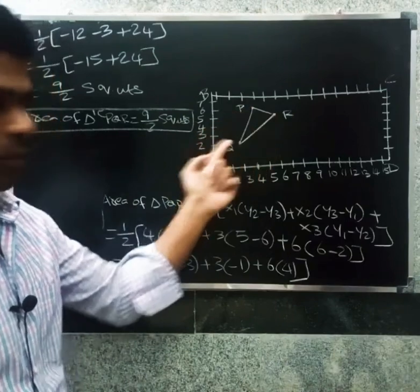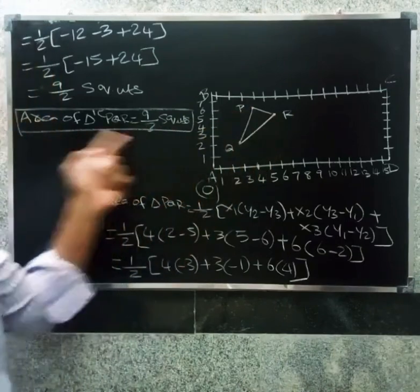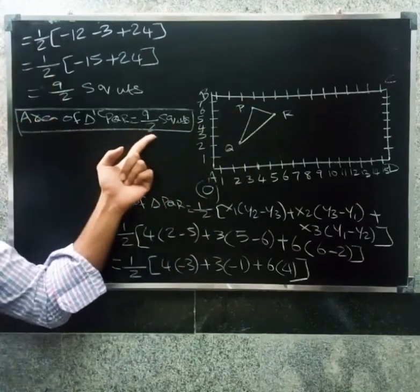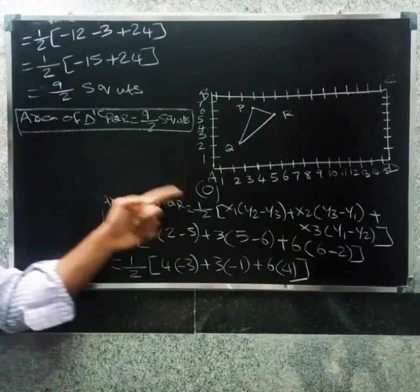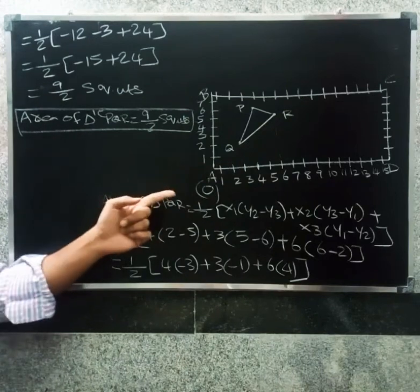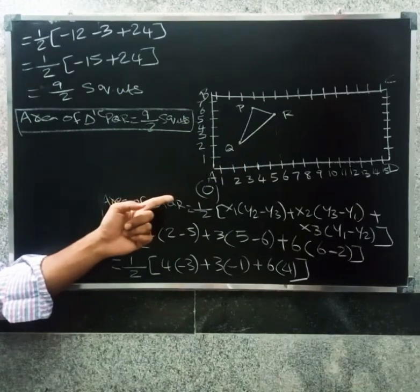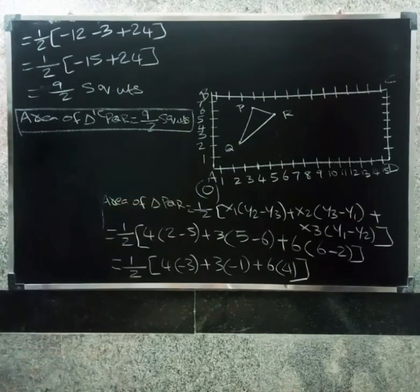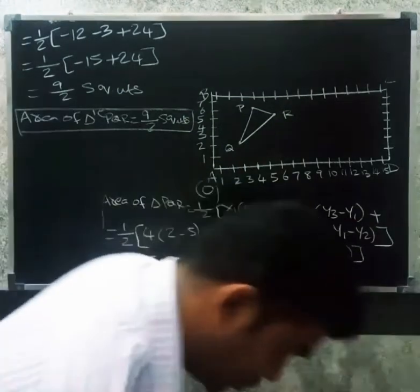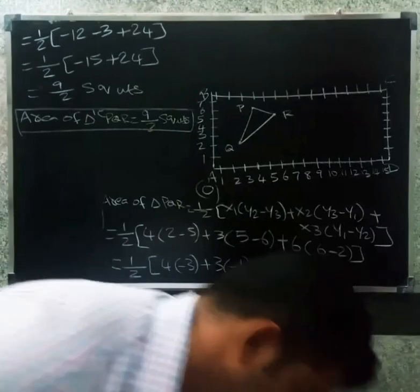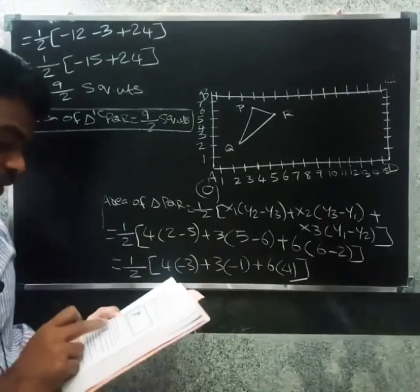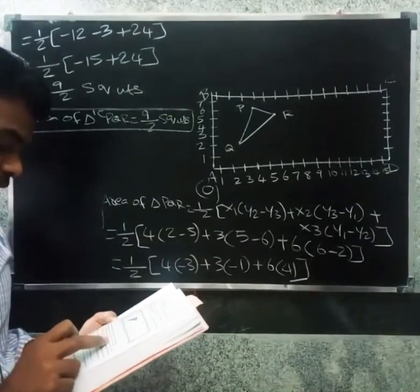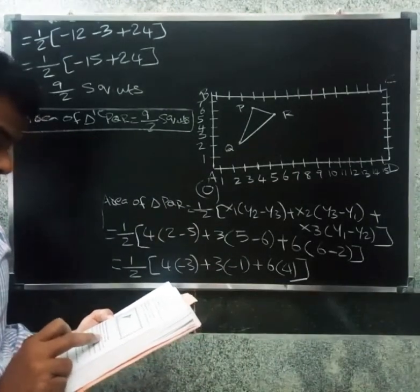This is the first question taking A as the origin, giving area of triangle PQR as 9/2 square units. Now the second question asks: what will be the coordinates of triangle PQR if C is taken as the origin?